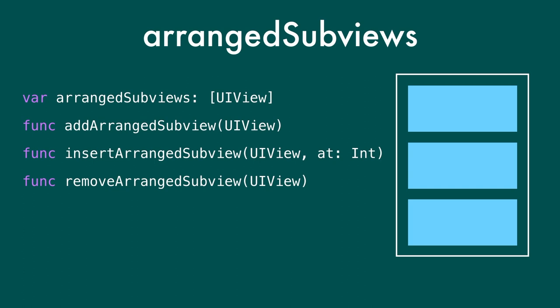There are helper methods to add, insert, and remove arranged sub views. Now, some of you might be thinking: UI Stack View is a regular UI View subclass, and UI Views already have a sub views property — why do you need arrangedSubviews? The reason is UI Stack View tries to separate tracking the views that are part of the stack from just regular sub views. You could have, for example, an image of a star in the upper left corner as a regular sub view — because it's not in your stack, it's not one of the arranged sub views, and you'd have to use explicit constraints to pin it.